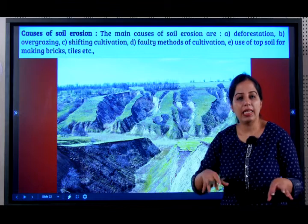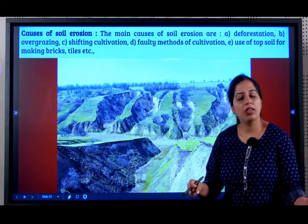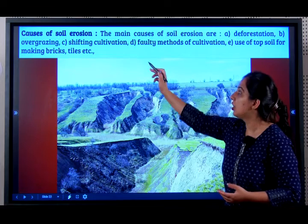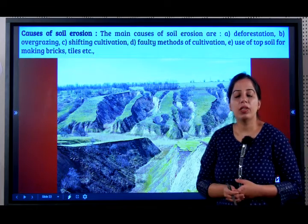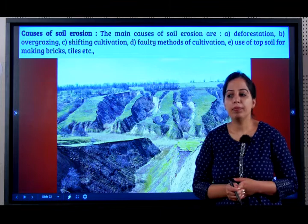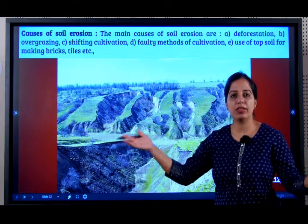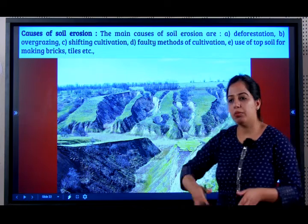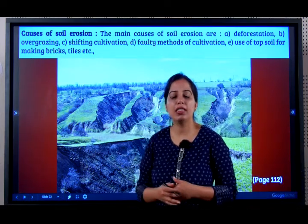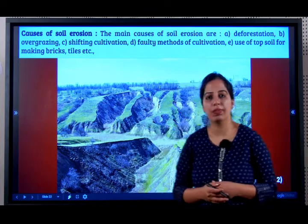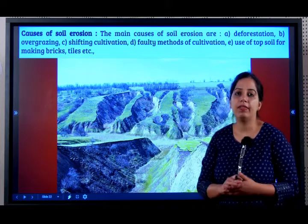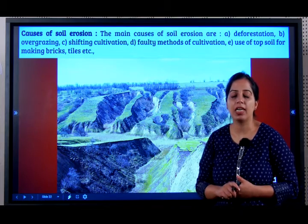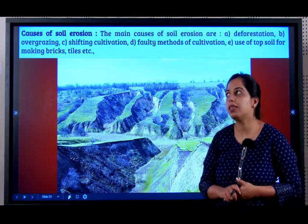Overgrazing. When a lot of cattle is left to overgraze, there are no roots left and all the grasses are evicted. Shifting cultivation — they will take a piece of land, grow crops, then burn that area and move to the next part to do agriculture. This is a very bad way to do agriculture and it harms the soil tremendously.